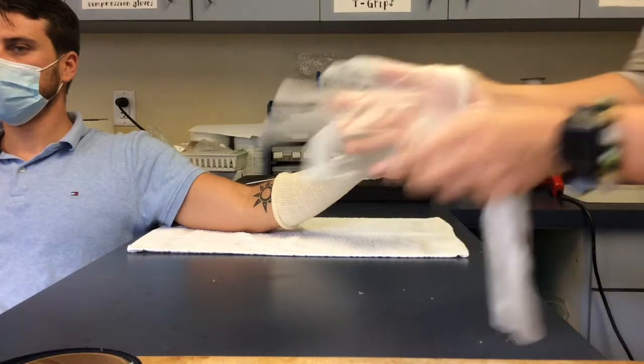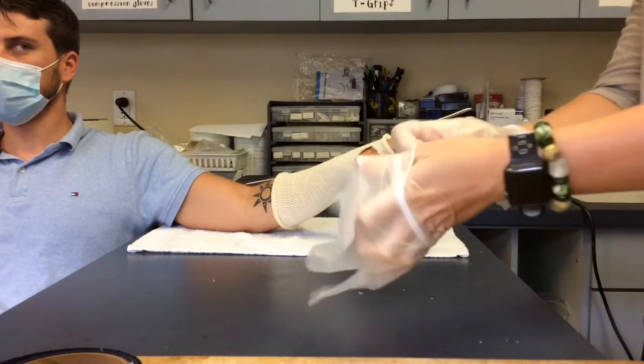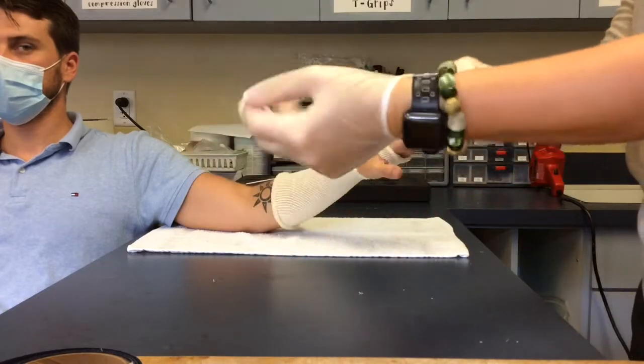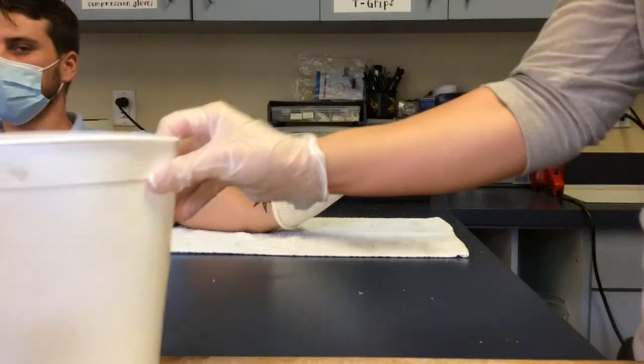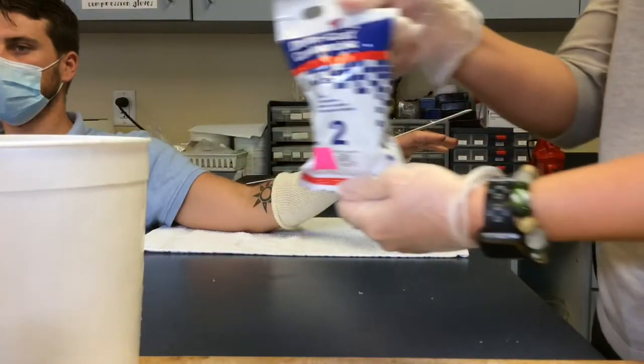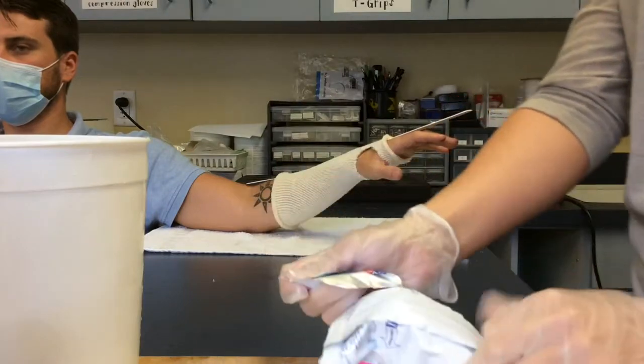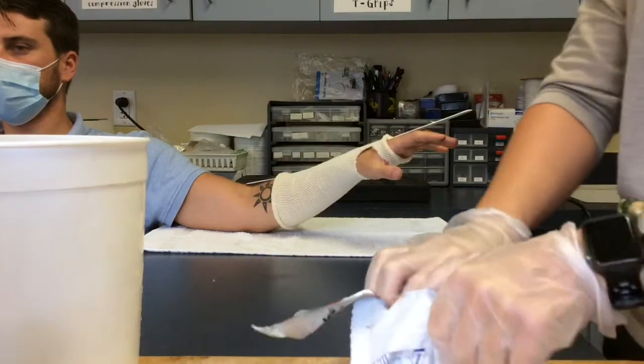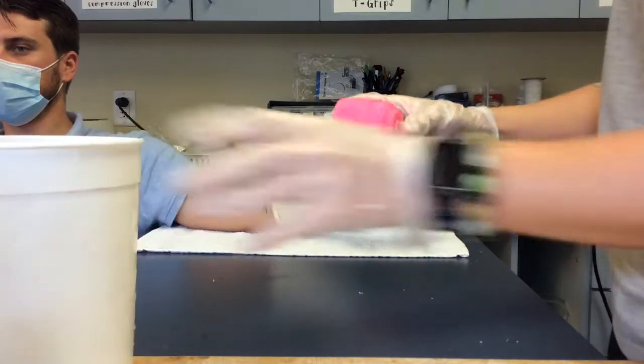Next, you want to get your gloves on and get your 2 inch delta cast and your water. Once you open the delta cast, it will start hardening. You want to work quickly after placing it in the water.